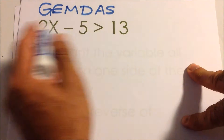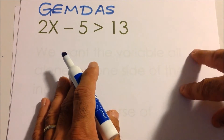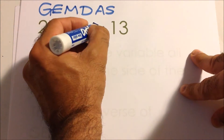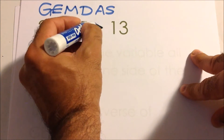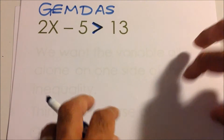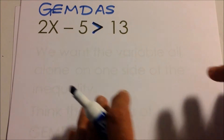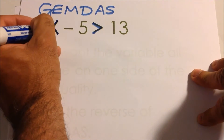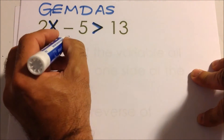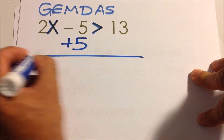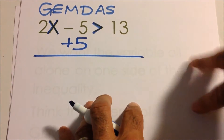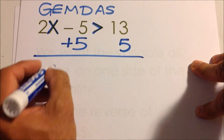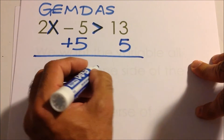We want to get rid of any minus or additions first. We see this minus 5 on this side of the inequality — we say inequality because we have an inequality sign. We want the x variable alone, so we're going to get rid of the 5 by doing the opposite operation. Whatever we do to one side, we're going to do to the other — we're going to add 5 on each side.